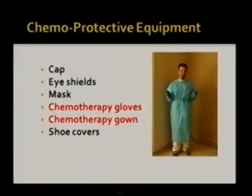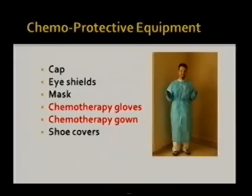These are some of the chemotherapy protective equipment you will see during the demonstrations today. The most important two pieces highlighted are the chemotherapy gloves and chemotherapy gowns. The ones pictured are what we have here — they are from Kimberly and made specially for chemotherapy. The gown is made of impervious material, so it's leak-proof — even if someone gets exposed, nothing will penetrate the gown. The gloves are made of tested material to prevent penetration of chemotherapy.